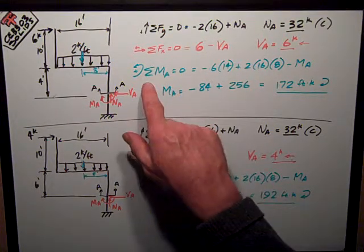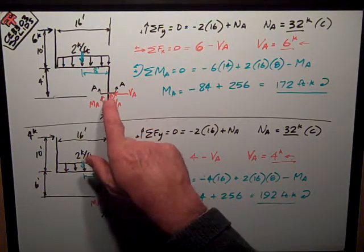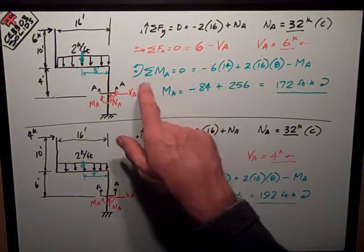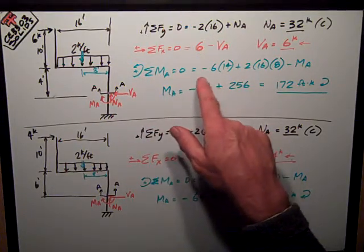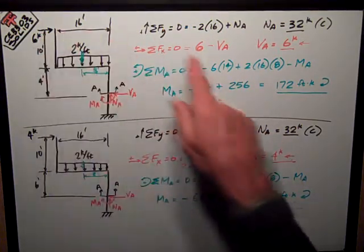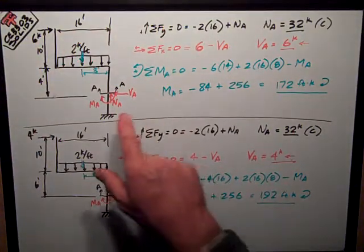Finally, what's the moment in this column at section A? Sum moments counter-clockwise is positive, equal to zero. It's equal to negative six times 14 feet, the moment arm. It's negative because it's clockwise.